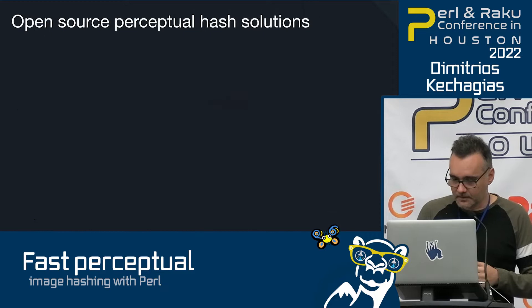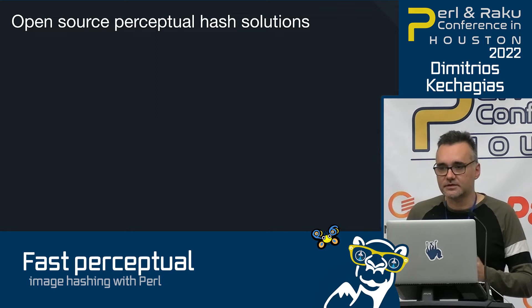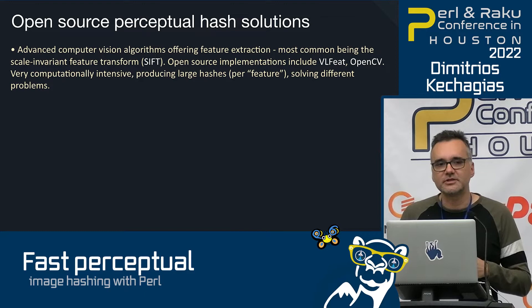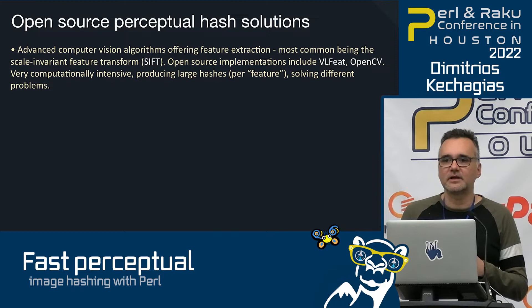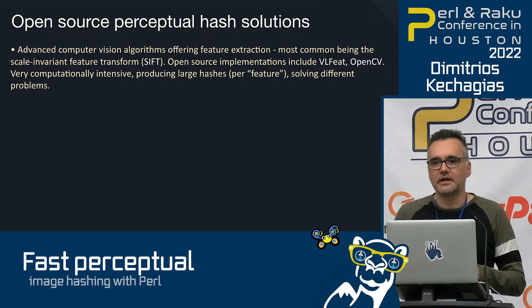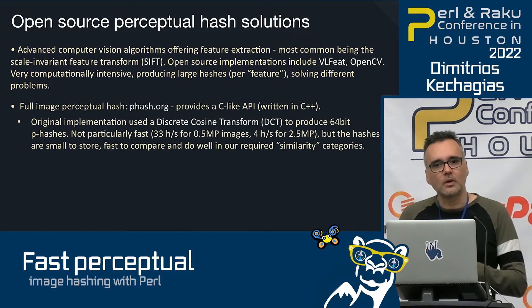I looked at open-source perceptual hash solutions. One category — very complex computer vision algorithms, computationally intensive, recognizing features with hundreds of bytes per feature — is not what we're looking for. The most well-known full-image perceptual hash is the phash.org implementation, which is C++ with a C-like API.